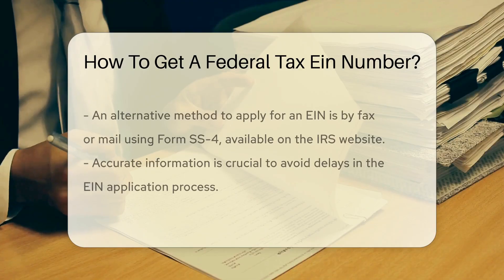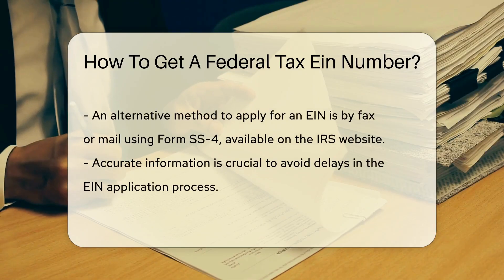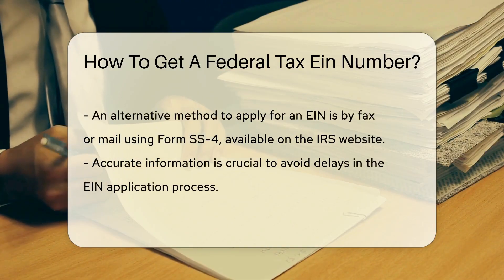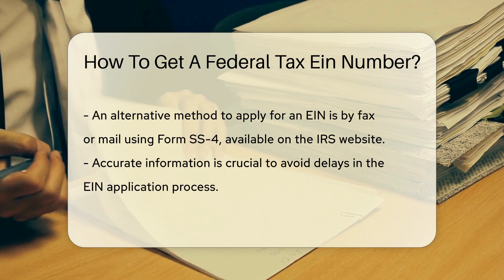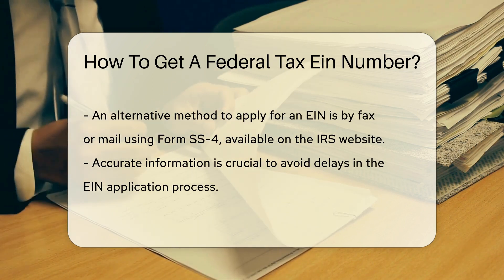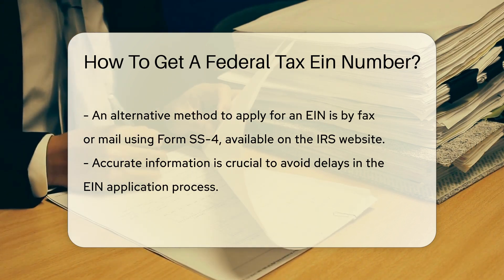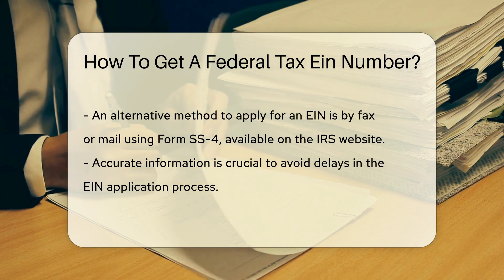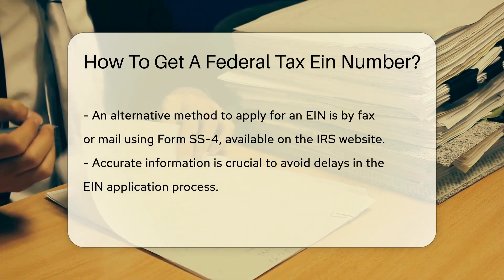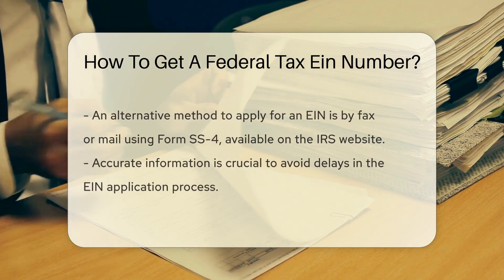You'll need to provide specific information about your business or entity, such as its legal name, address, and type of entity. Alternatively, you can apply for an EIN by fax or mail using Form SS-4, which is available on the IRS website.